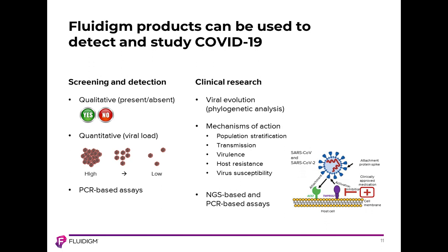Transitioning over to clinical research, there's a lot of work being done as much remains to be discovered about this virus, such as viral evolution through phylogenetic analysis. There's a lot of work on mechanisms of action, such as population stratification — which individuals are succumbing more readily to this virus versus those with a healthier immune response. There's also interest in transmission, virulence, host response, host resistance, and virus susceptibility — what compounds may effectively combat and eradicate the virus. A combination of PCR technologies and next-generation sequencing is available for these questions.